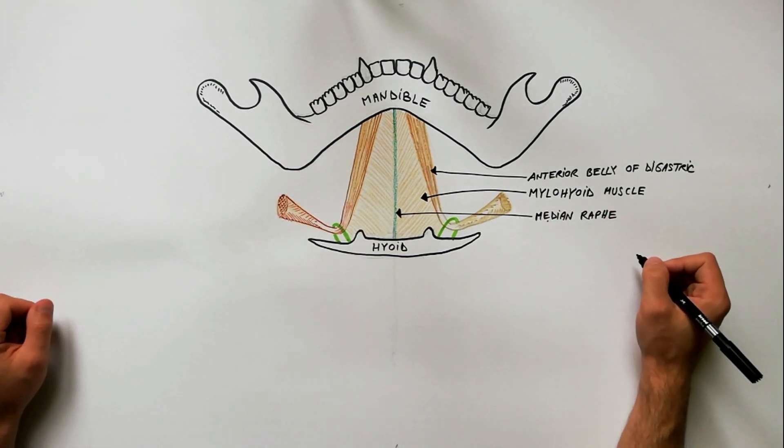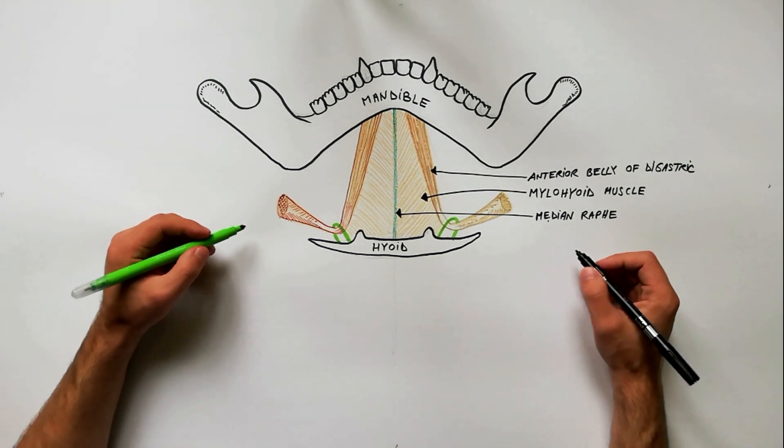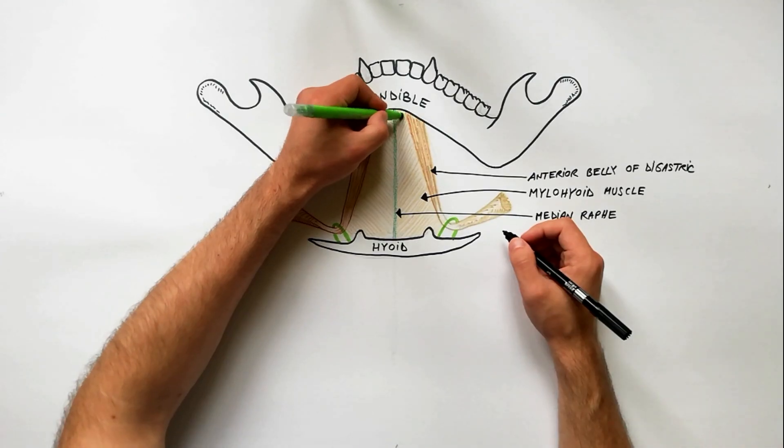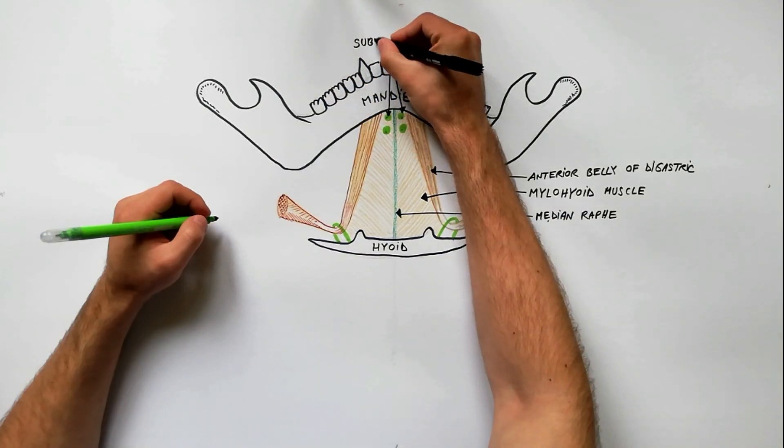The contents of Submental Triangle are as follows: three to four submental lymph nodes.